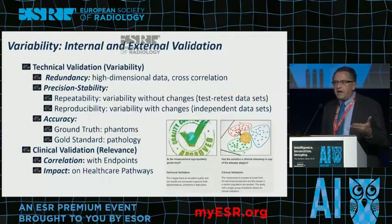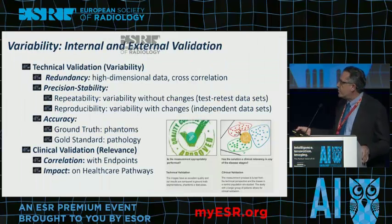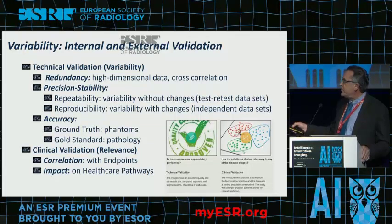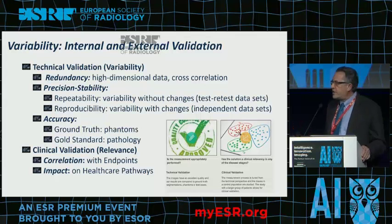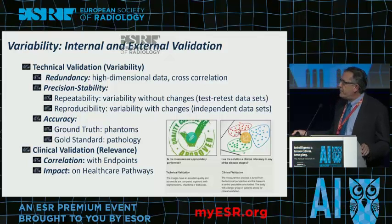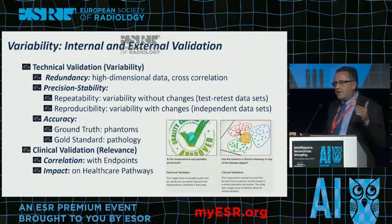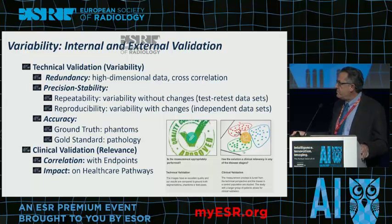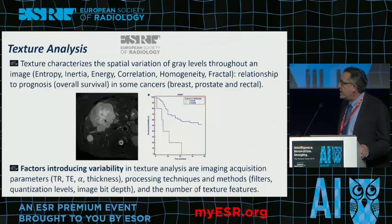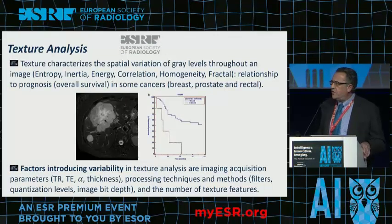Validation is extremely important. We have technical validation, which deals with variability — including precision, stability, and accuracy — and most importantly, clinical validation. Clinical validation means the relevance of findings from images and their correlation with clinical endpoints and impact on healthcare pathways. As a short example, textural analysis of liver metastases through certain parameters may allow us at the outset to classify lesions into those that will respond and those that will not.